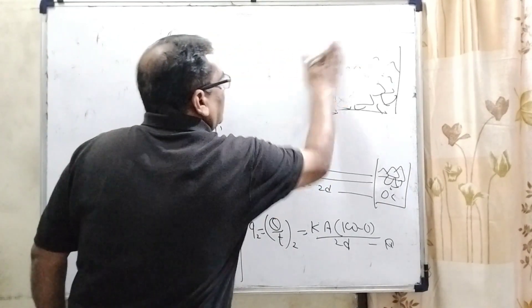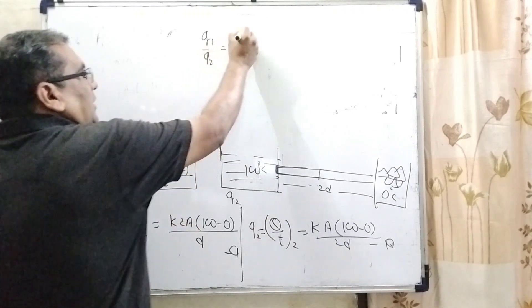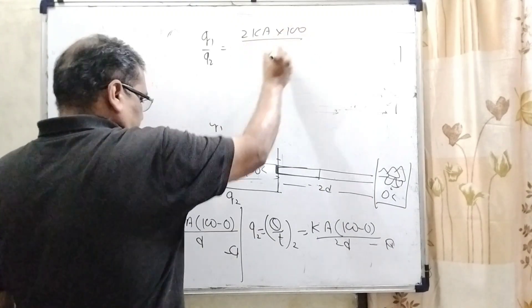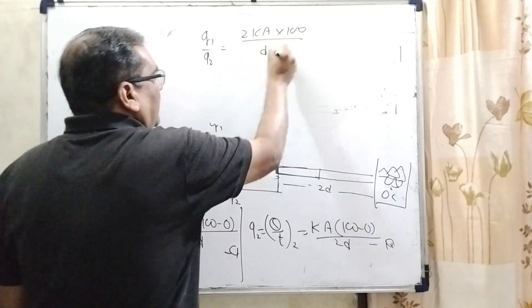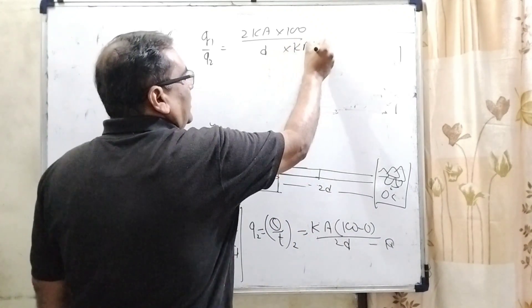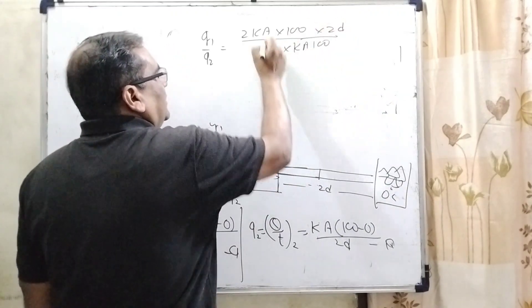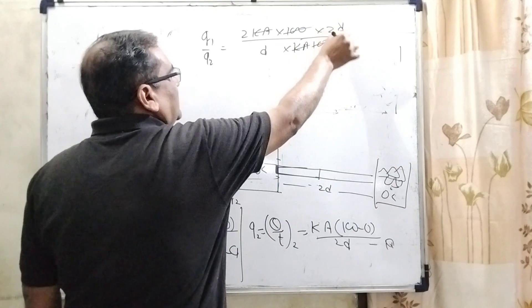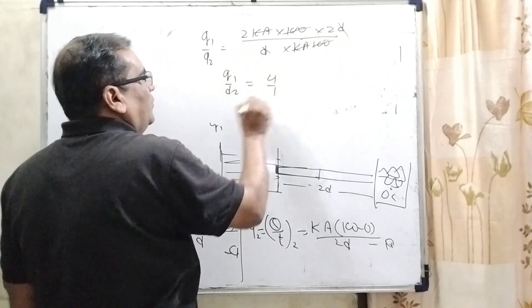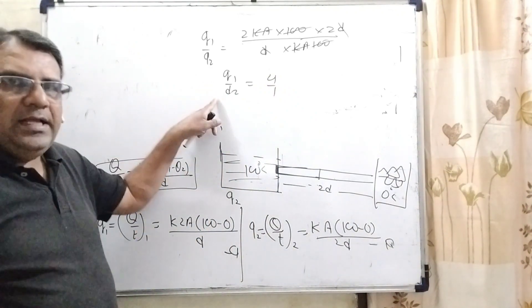So here, now Q1 upon Q2 equals K times 2A times 100 upon D, divided by K A times 100 upon 2D. This upon goes up and reaches the numerator, then 2D. So this K, K cancels, 100, 100 cancels, D, D cancels, then Q1 upon Q2 is equal to 2 times 2, which is 4, so 4 to 1. So this is the answer. I hope you understood this question.